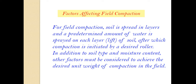This field compaction is familiar to you - you may have seen it before any type of building construction or road construction. For field compaction, the soil is spread in layers and a predetermined amount of water is spread on each layer. In different types of soil the amount of water to be added is different. That particular amount of water is sprayed on each layer of the soil, after which the compaction is initiated by any type of roller.